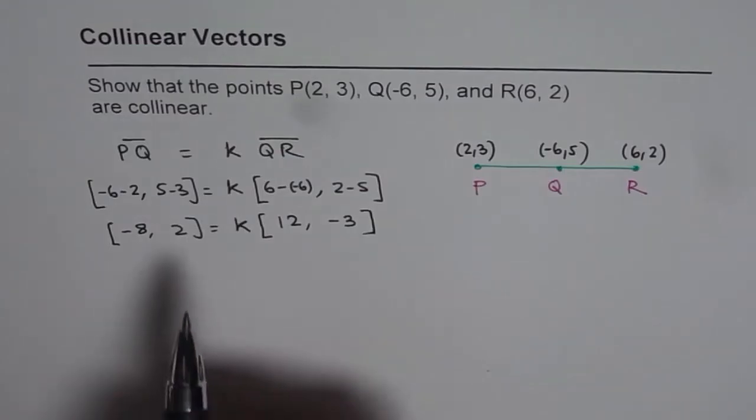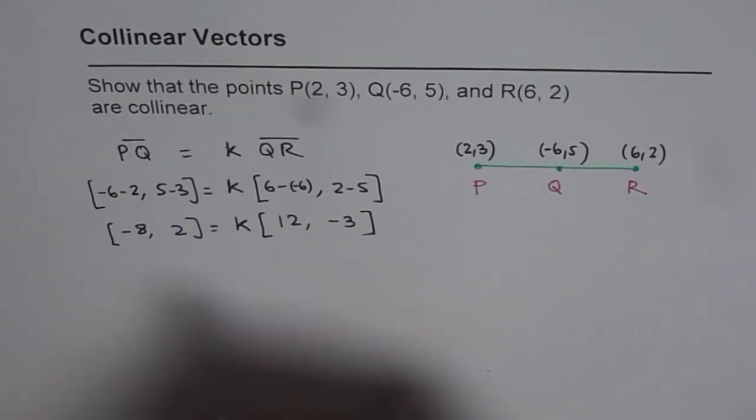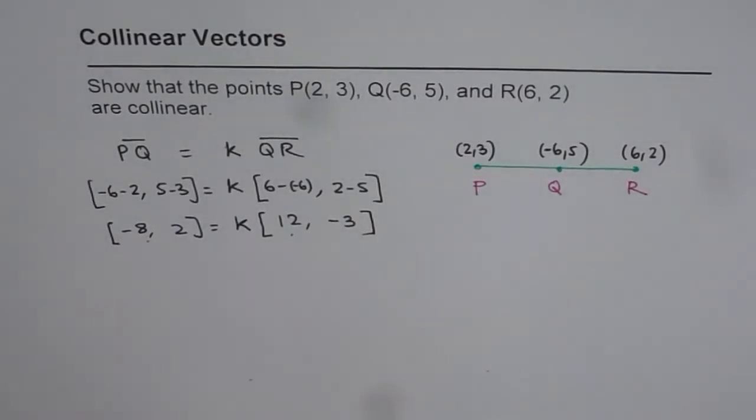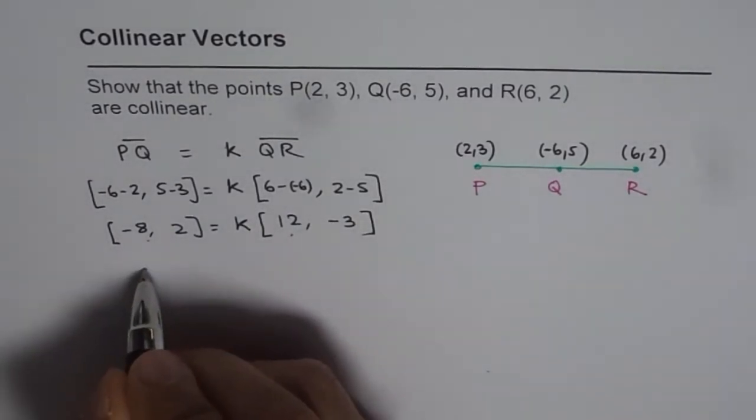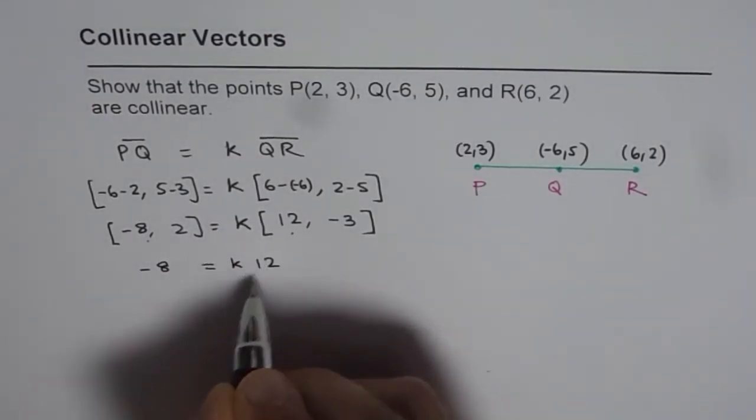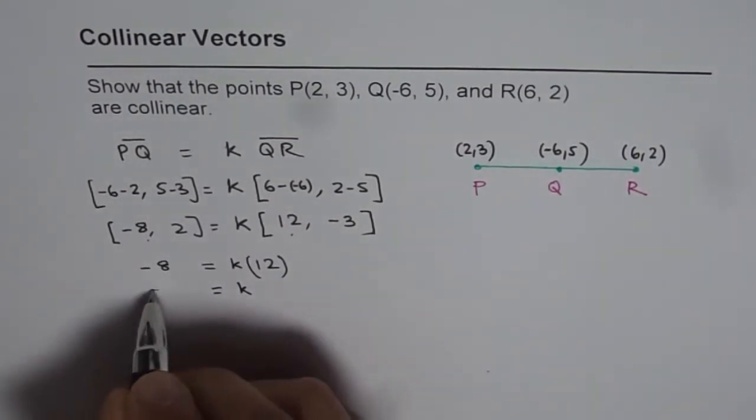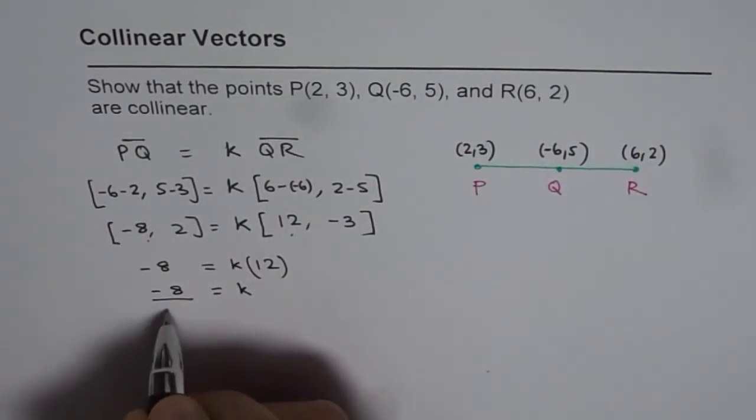Now we have to figure out if there is a value of K which can satisfy this equation. So if you compare the X values, that is to say that minus 8 equals to K times 12. So that gives you the K value of minus 8 over 12.